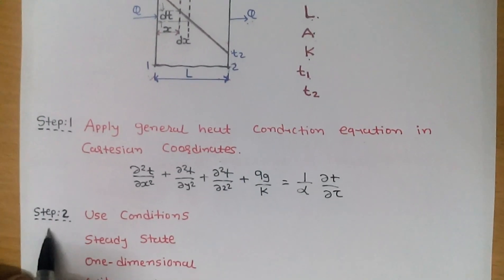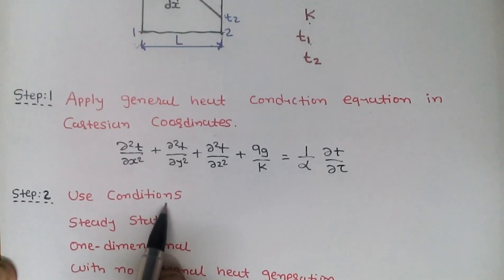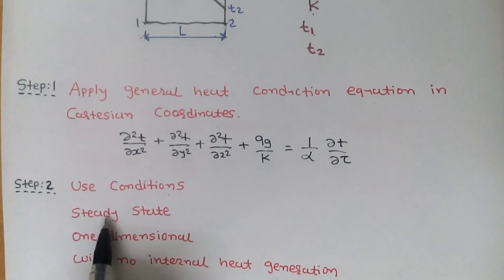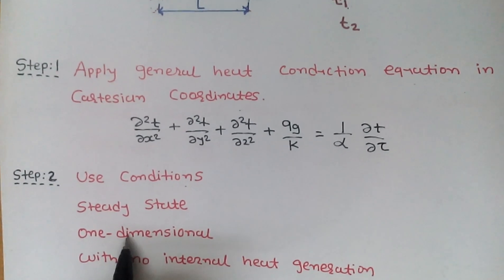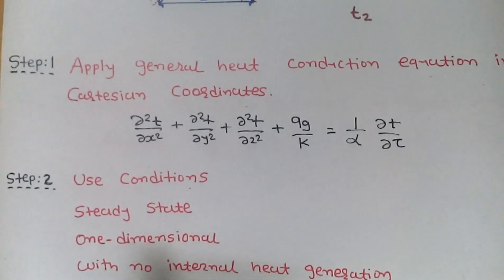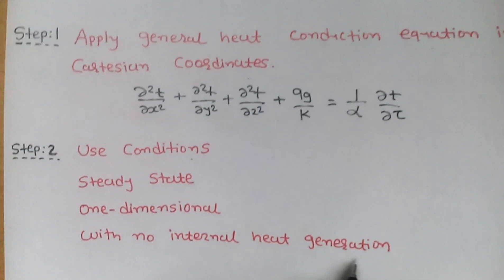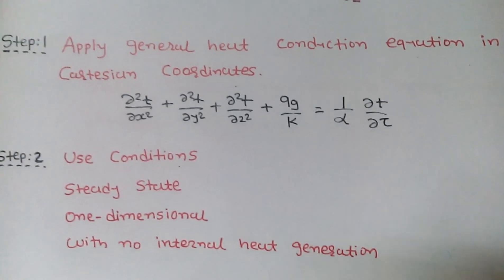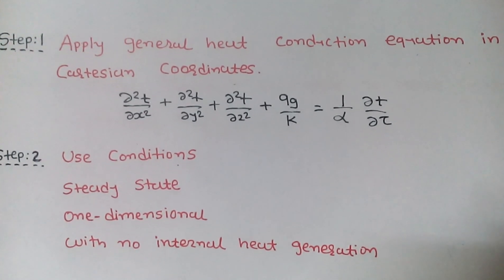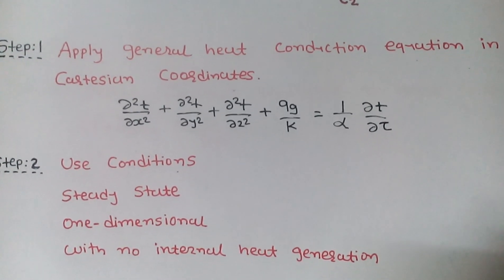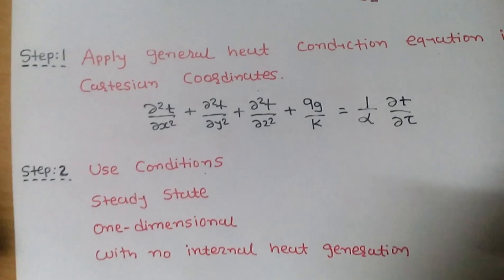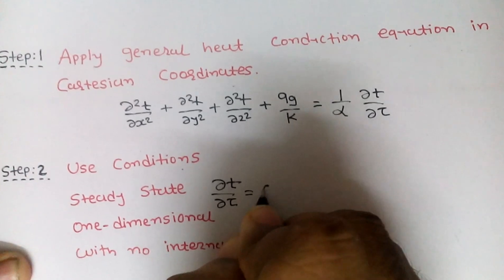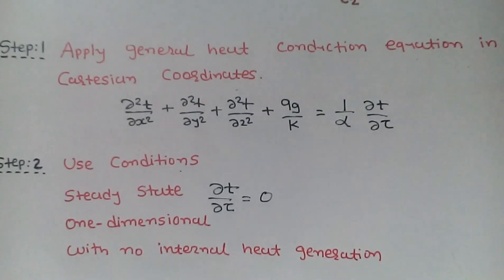In step two, we use three conditions. The first condition is steady state, the second condition is one-dimensional, and the third condition is with no internal heat generation. Steady state means temperature does not change with respect to time, so the derivative is zero: ∂T/∂τ = 0.